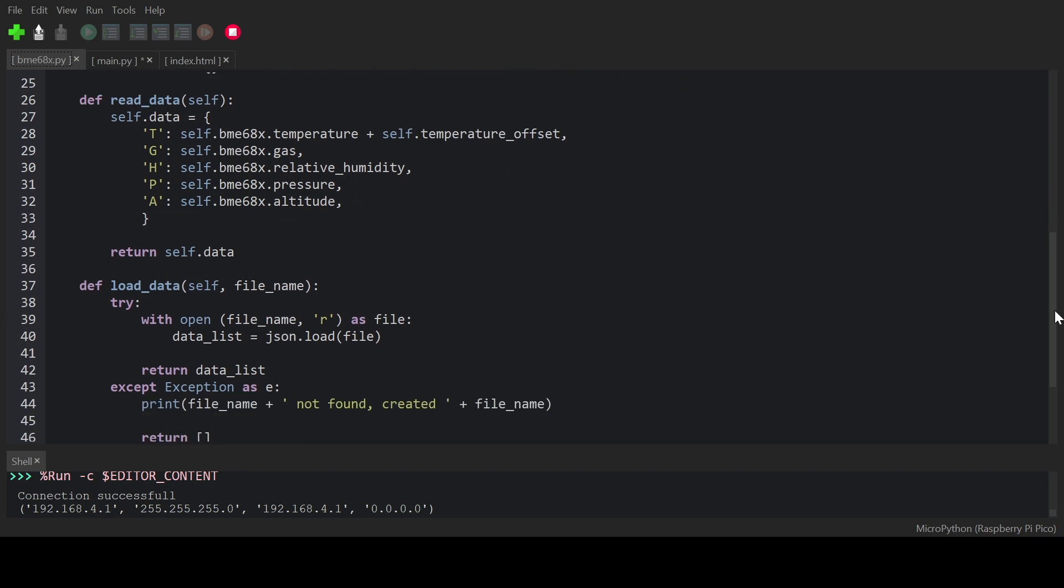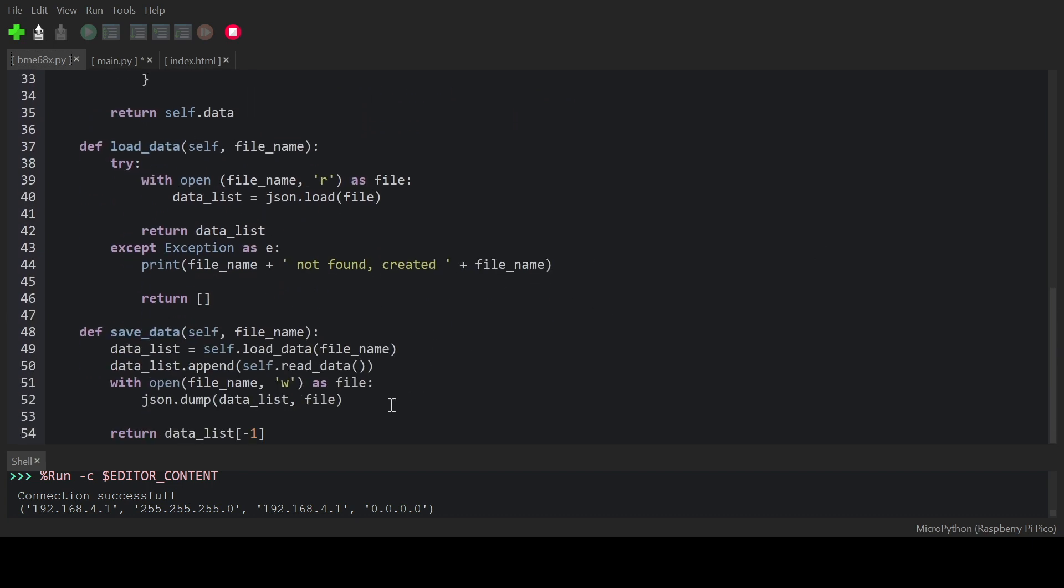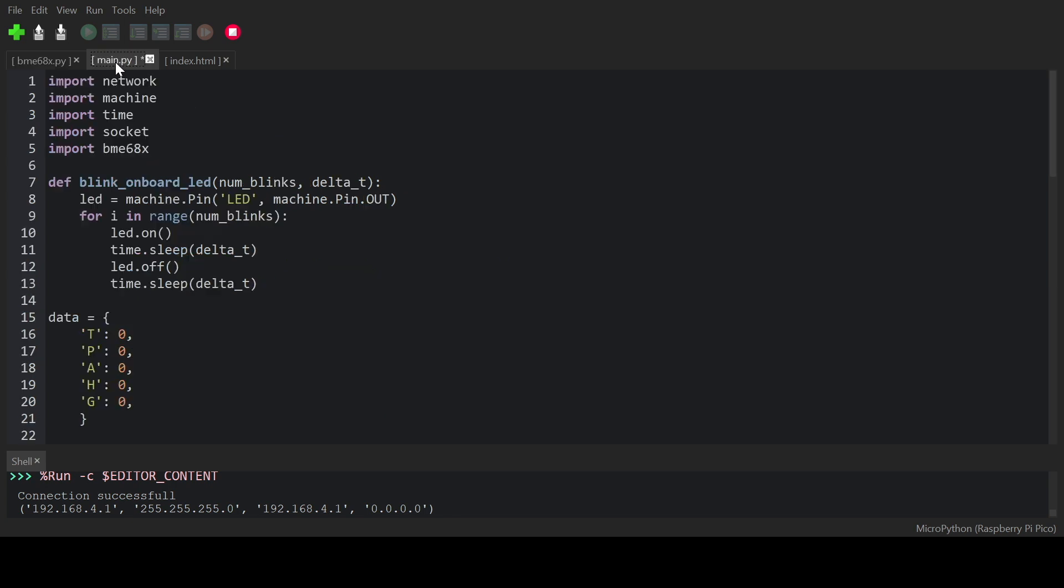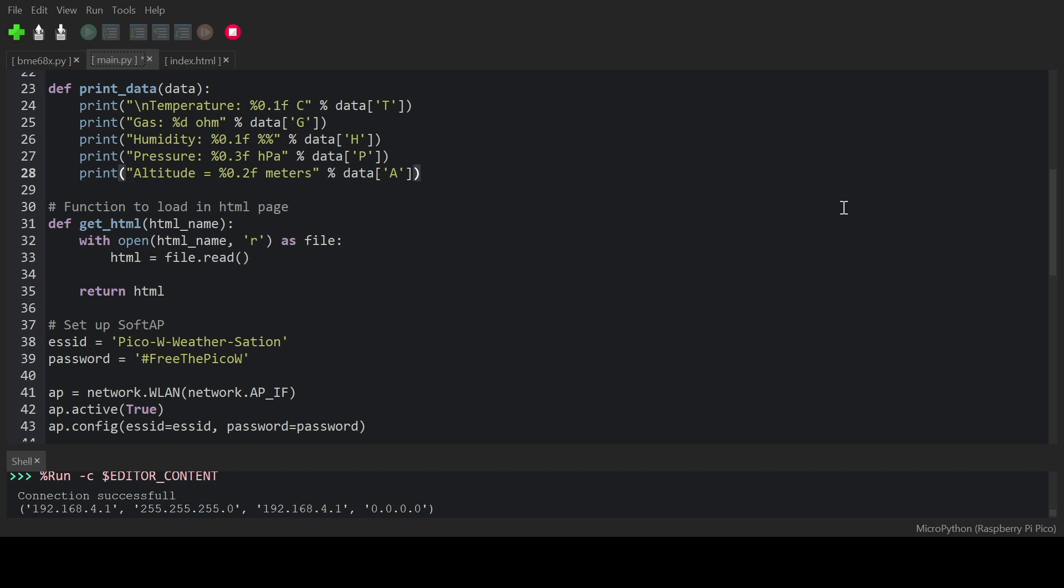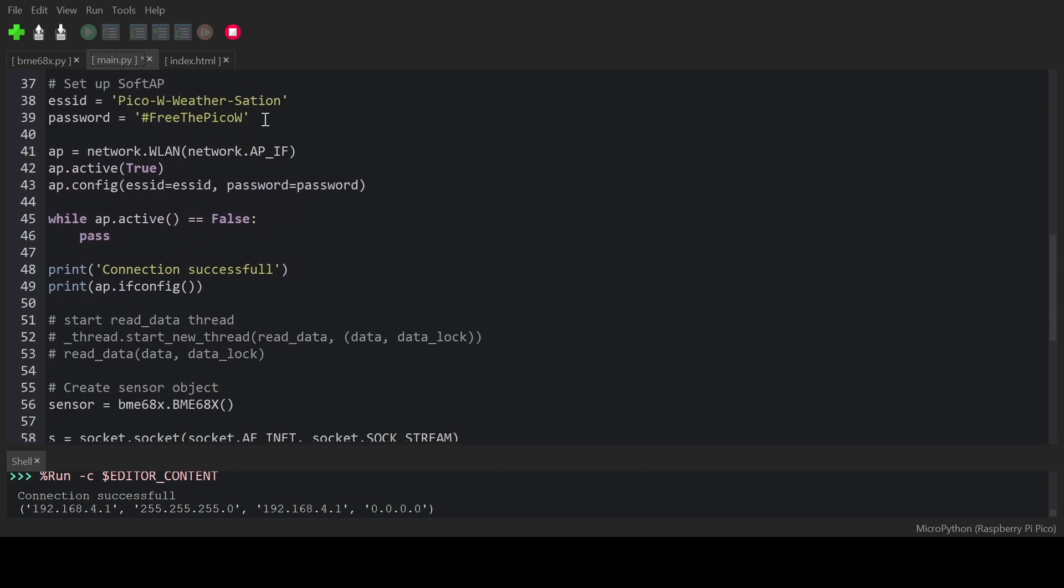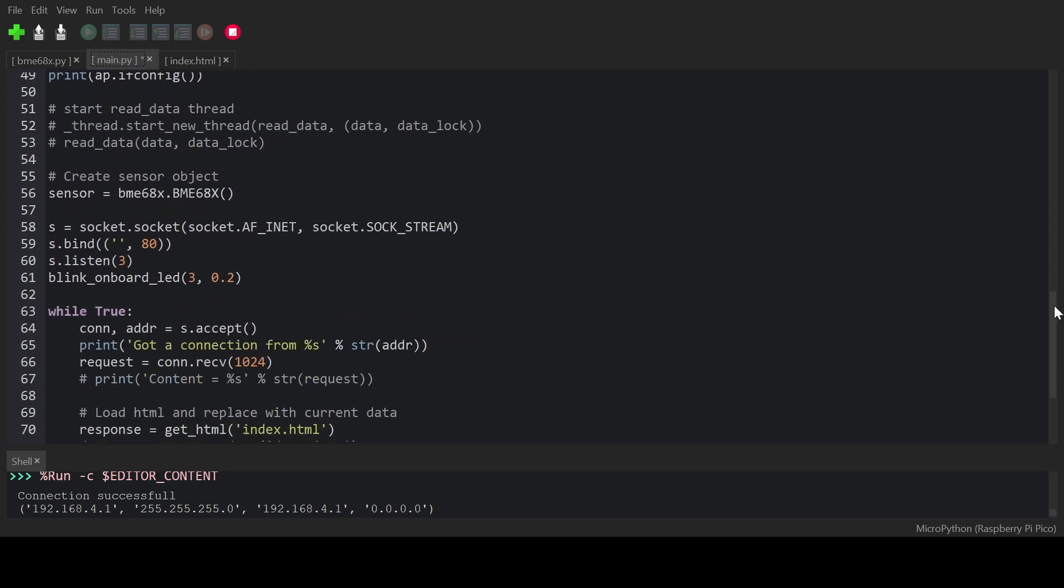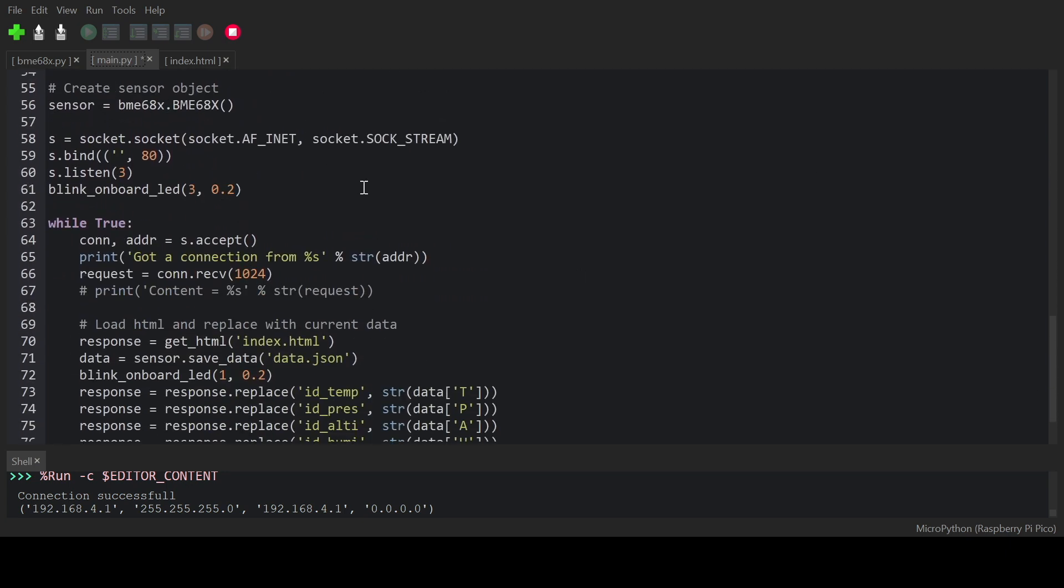The main.py file contains some helper functions to blink the on-board LED for status indication, print the data and load the HTML file. Then the Pico W gets configured as a soft access point so that we don't need a router to connect over Wi-Fi. We set up a web socket and blink the on-board LED three times in case there were no errors.